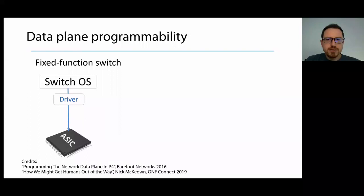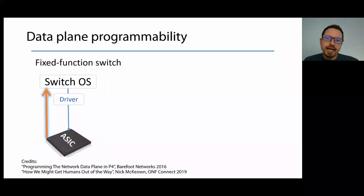To reach these high packet rates, switch vendors have been designing dedicated chips for a long time. Usually these chips were designed to perform specific operations like IP packet processing, tunneling, NAT translations, and so on. The switching chip and specific features are coded, and the switch operating system could only configure and use those features.